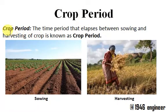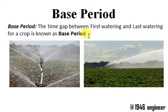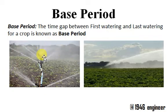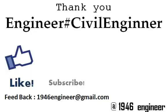If you understand the basic concept of crop period, please don't forget to hit the like button and subscribe to my channel Engineer Hash. Now, base period is the time gap between the first watering and last watering of a crop. This base period is related to watering. Usually the crop period is more than the base period — they are two different terms.